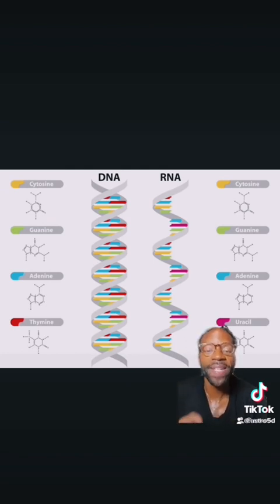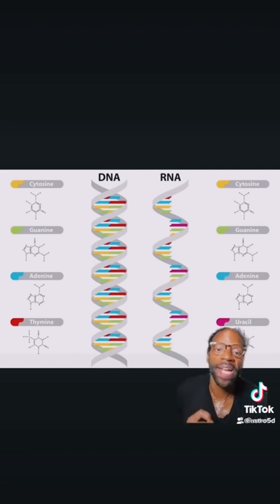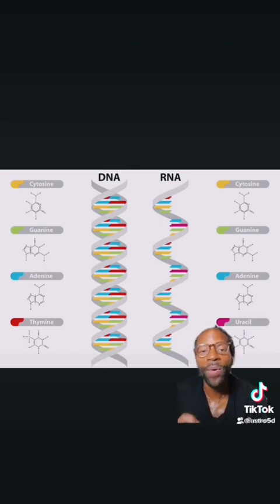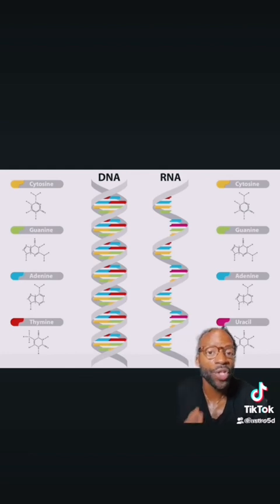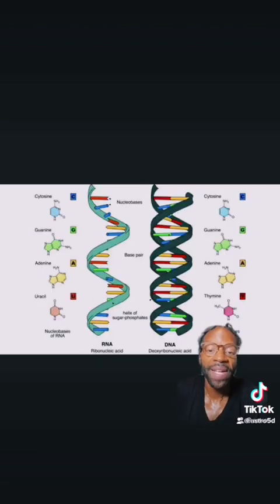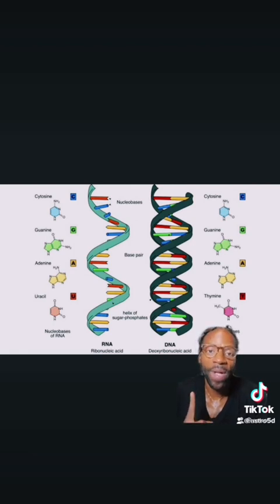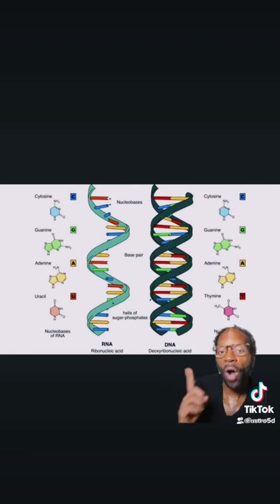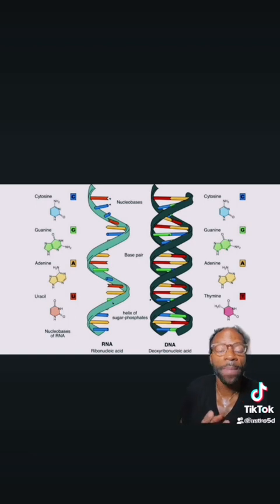DNA stands for deoxyribonucleic acid and RNA stands for ribonucleic acid. Deoxyribose is a type of sugar and ribose is a type of sugar. The nucleic acid is a type of biomolecule. DNA is taught to have two strands and RNA has one singular strand.